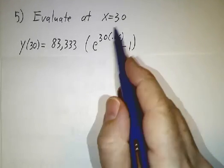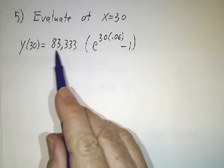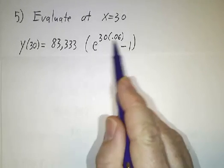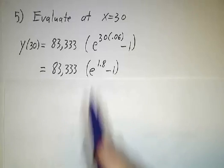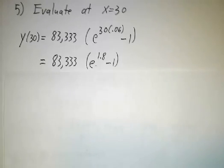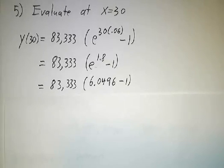So we just plug in x equals 30. We get 83,333 times e to the 30 times 0.06 minus 1. That's e to the 1.8 minus 1. E to the 1.8 is about 6.05.